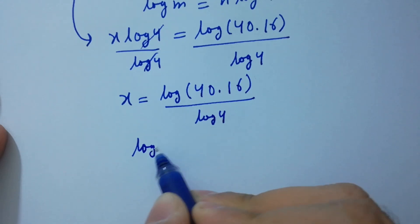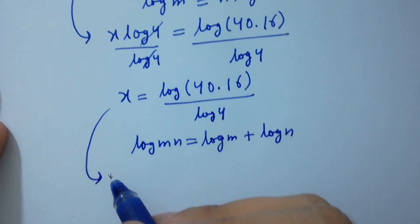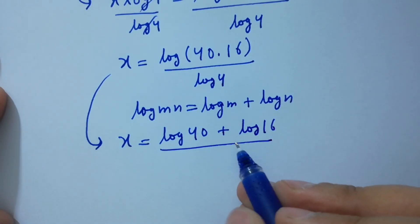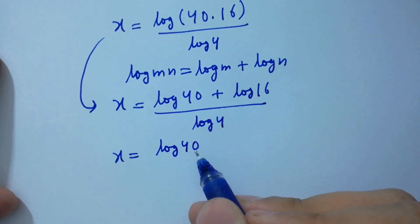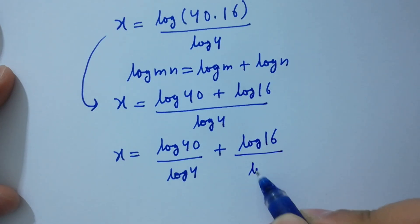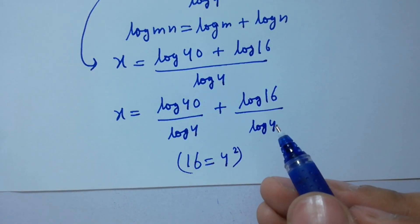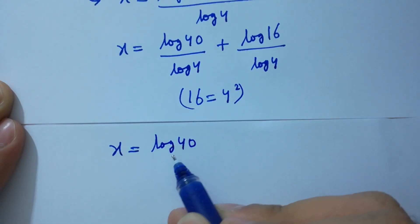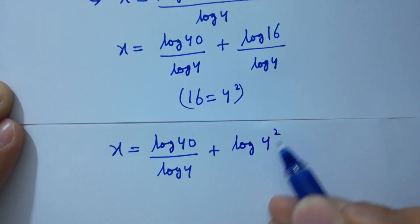As log mn equals log m plus log n, we can write x equals log(40 times 16) over log 4, which expands to log 40 plus log 16 over log 4. Since 16 equals 4 squared, log 16 equals 2 log 4.